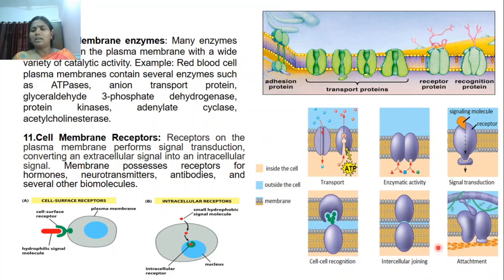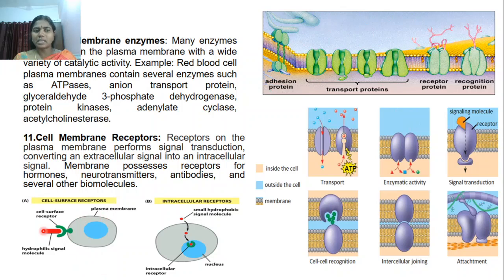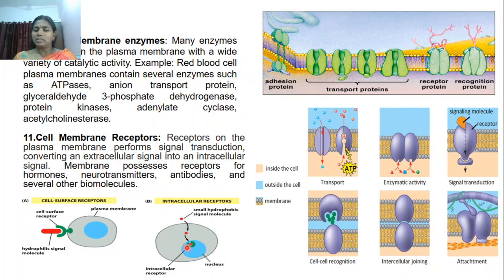Different diagrams show the functions: transport, enzymatic activity, signal transduction, cell-cell recognition, intracellular joining, and attachment. A diagram shows cell surface receptors — a receptor molecule receives a specific signal, and the message is triggered inside the cell. It may result in cell division, DNA replication, or transcription.